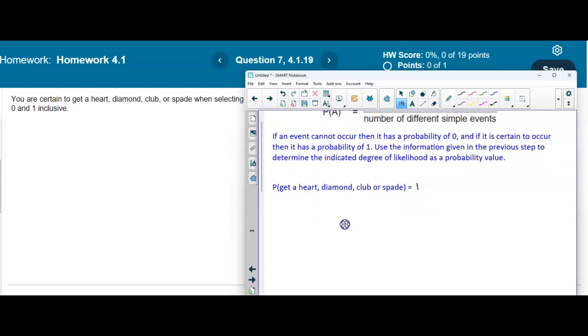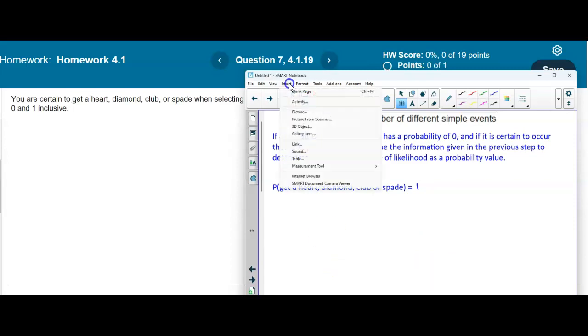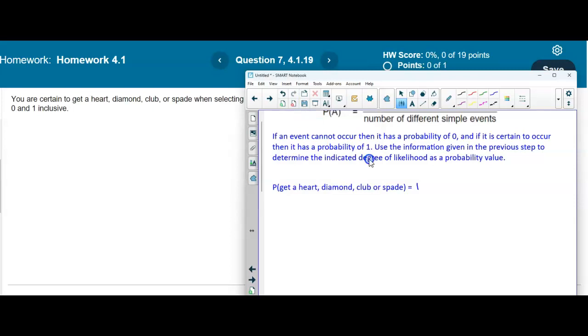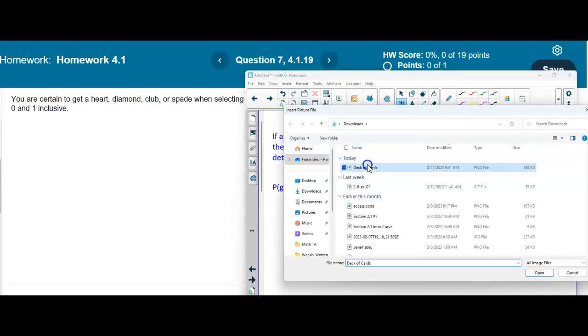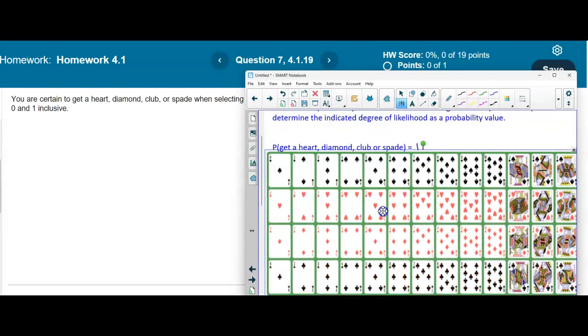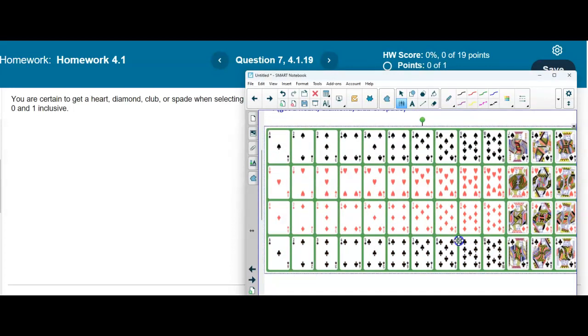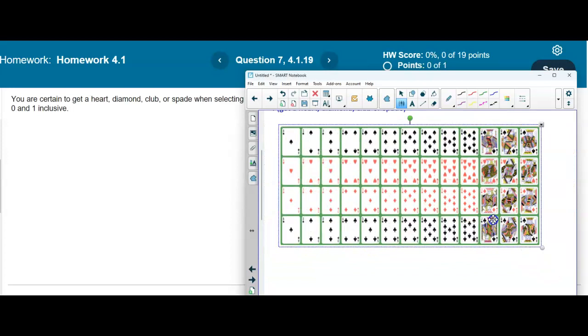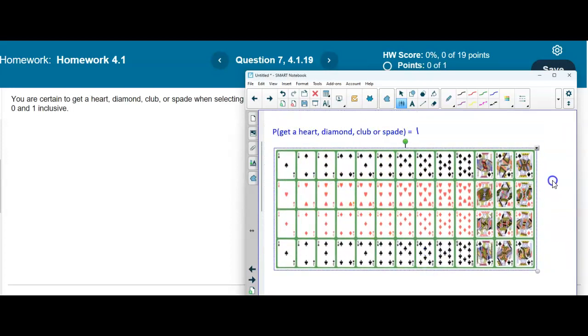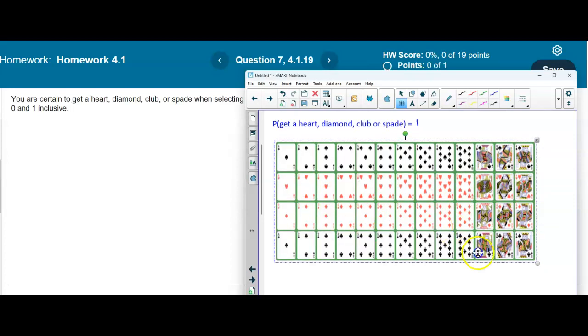Now if you recall, in a deck of cards there are 52. So let me go ahead and show you that deck of cards. So here's your deck of cards, and there's a total of 52 because we have 13 spades, 13 hearts, 13 diamonds, and 13 clubs.